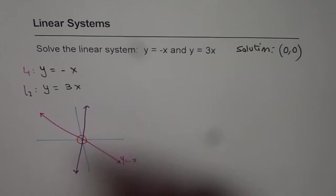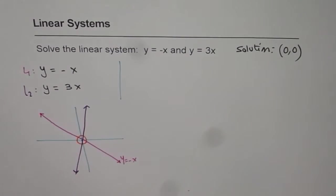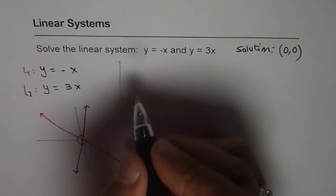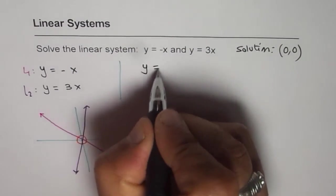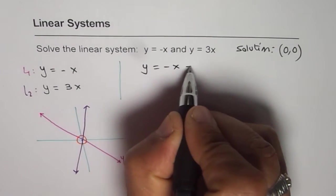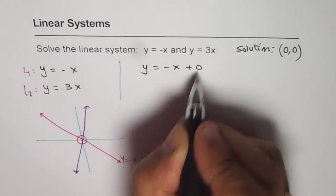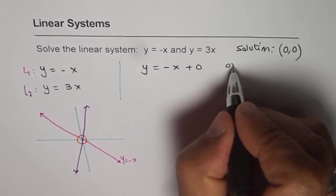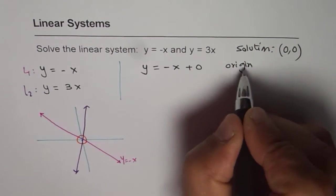Other things which we notice about this line is something like this. When you write this equation, it is clear to you that the equation is y equals minus x plus 0. Zero is your y intercept or we can say origin is y intercept.